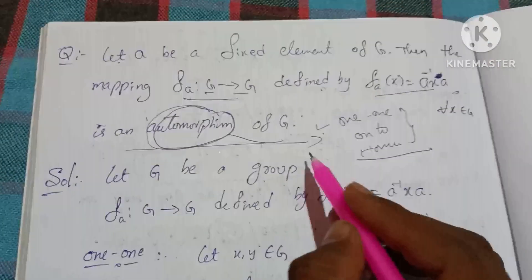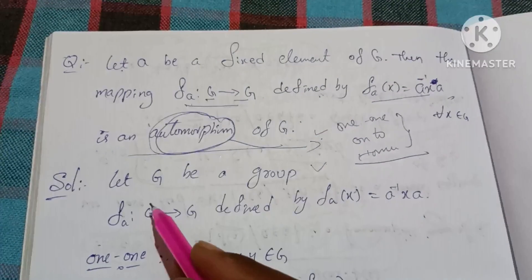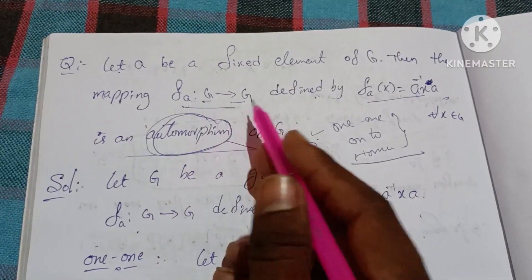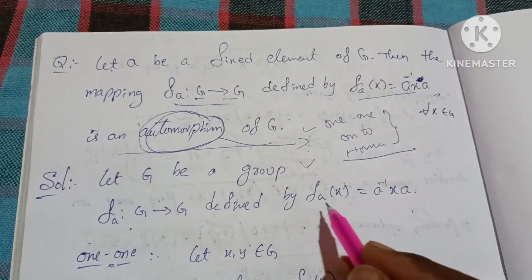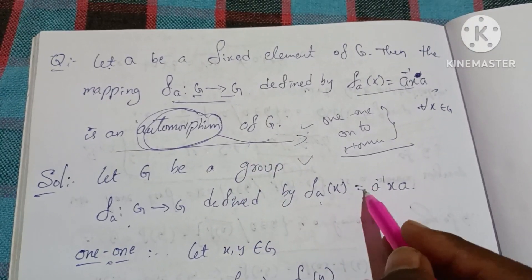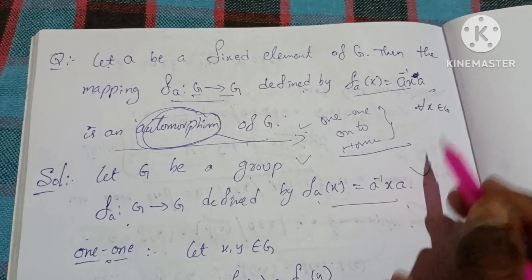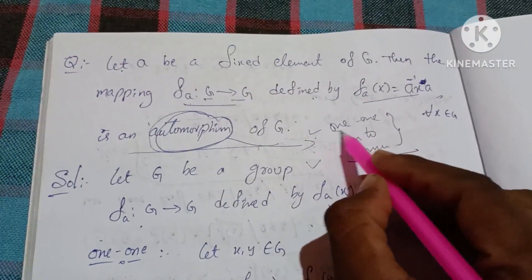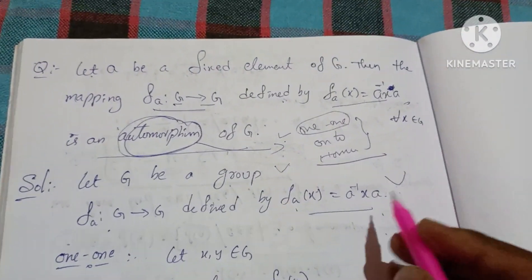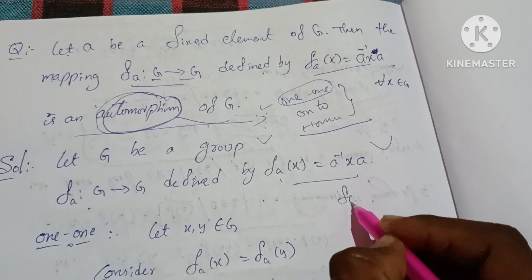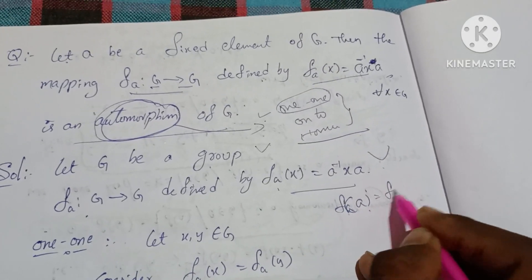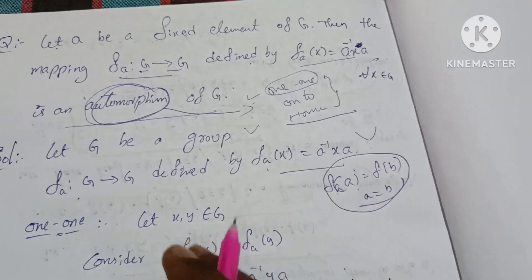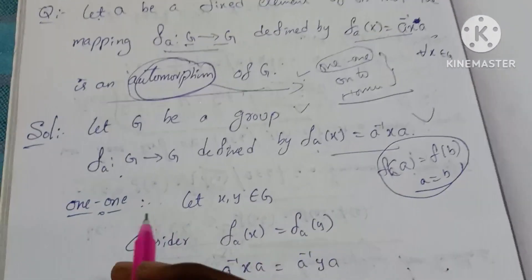Let G be a group. We have the function f_a from G to G, defined by f_a(x) equal to a inverse x a. The first condition is one-to-one; we need to prove it. f_a(x) equal to f_a(y) implies x equal to y. So we need to prove this one-to-one condition.